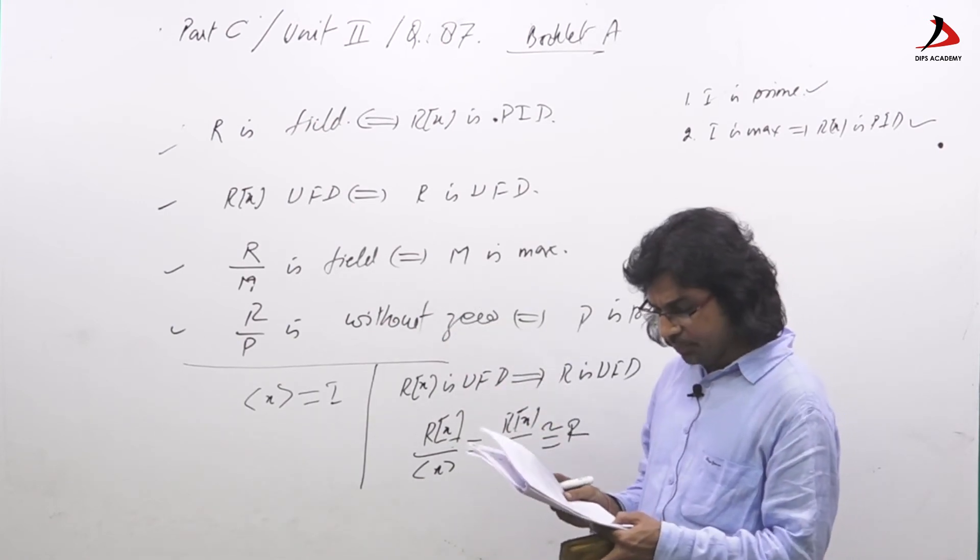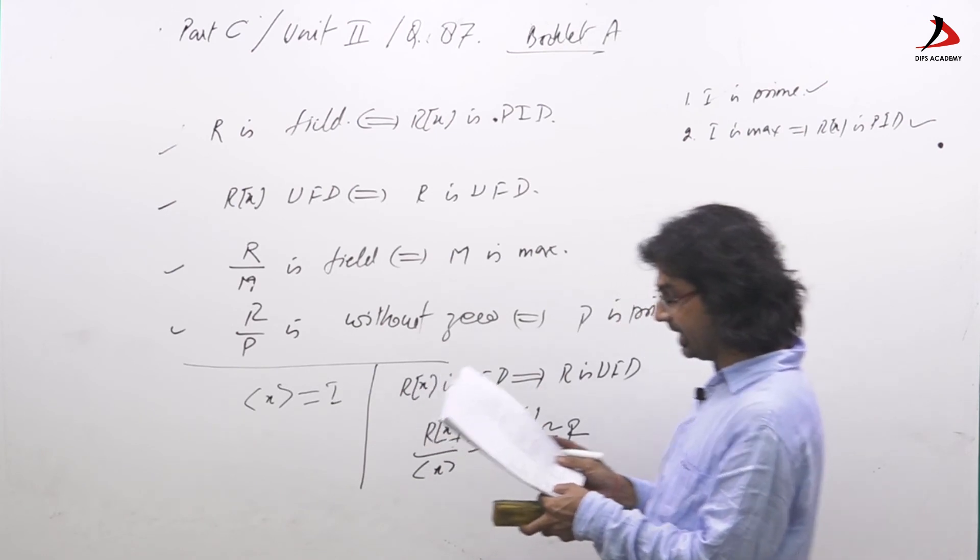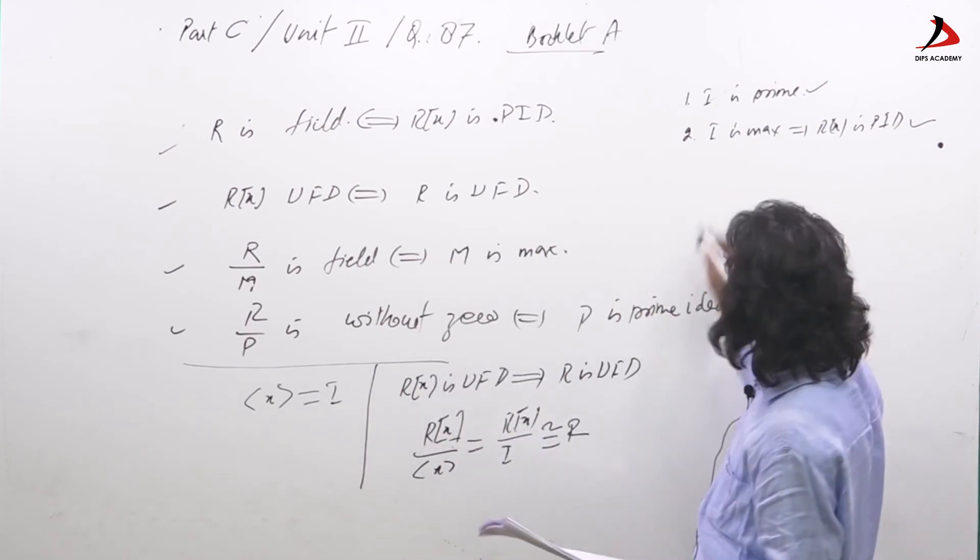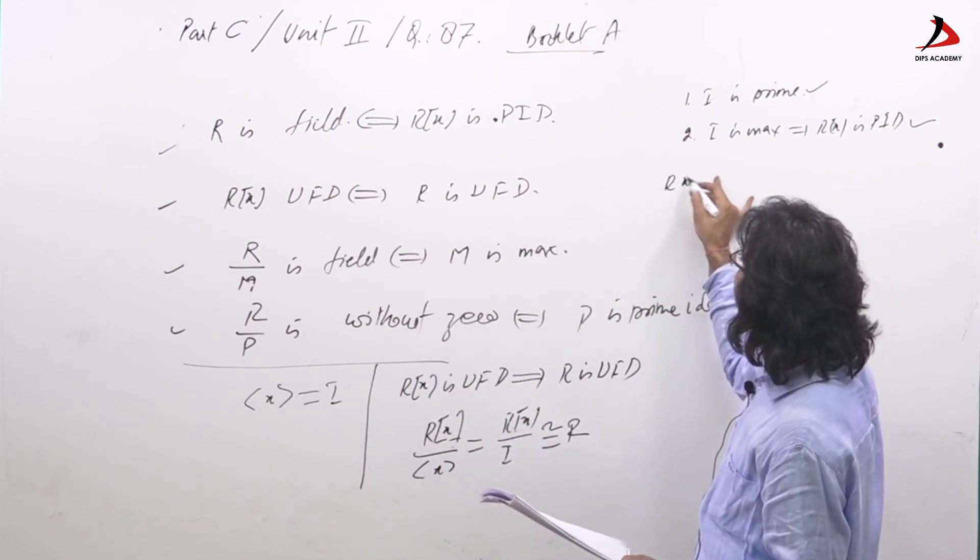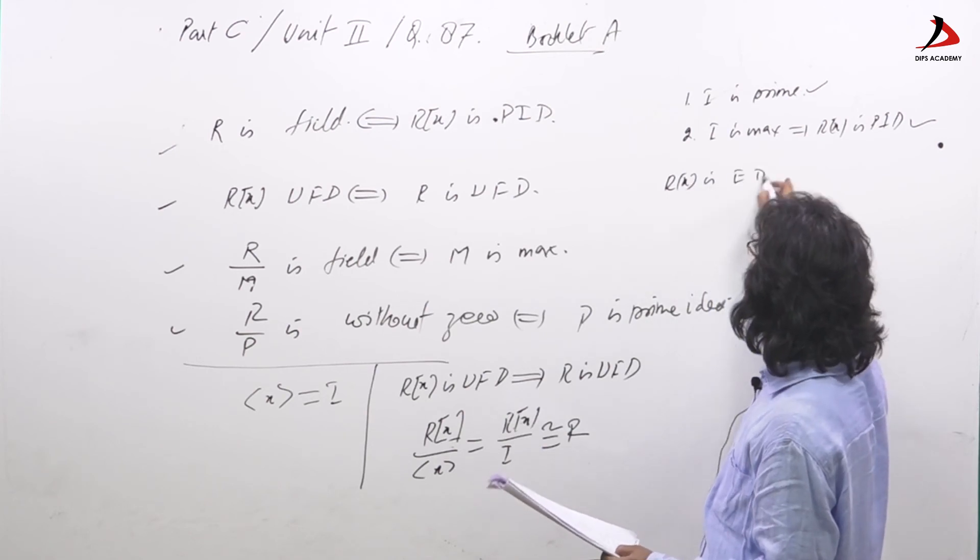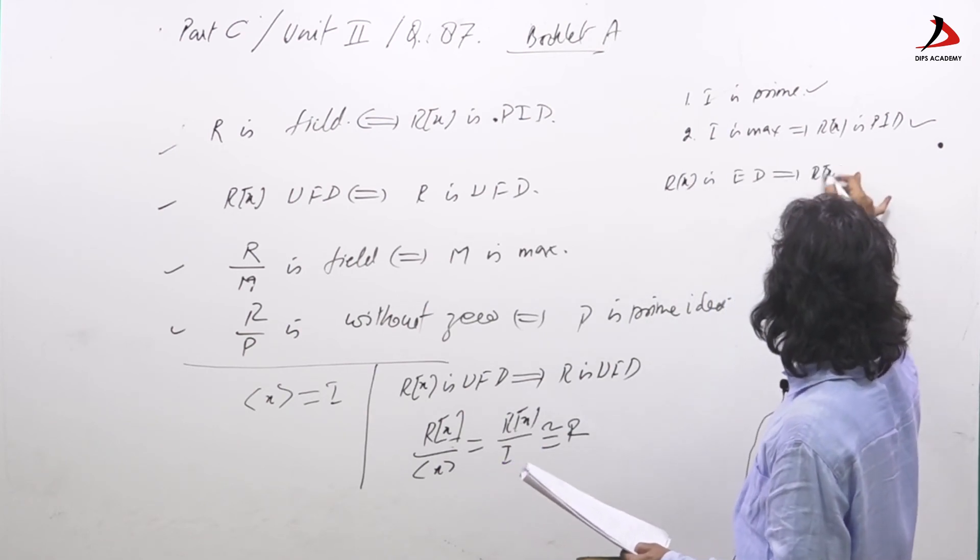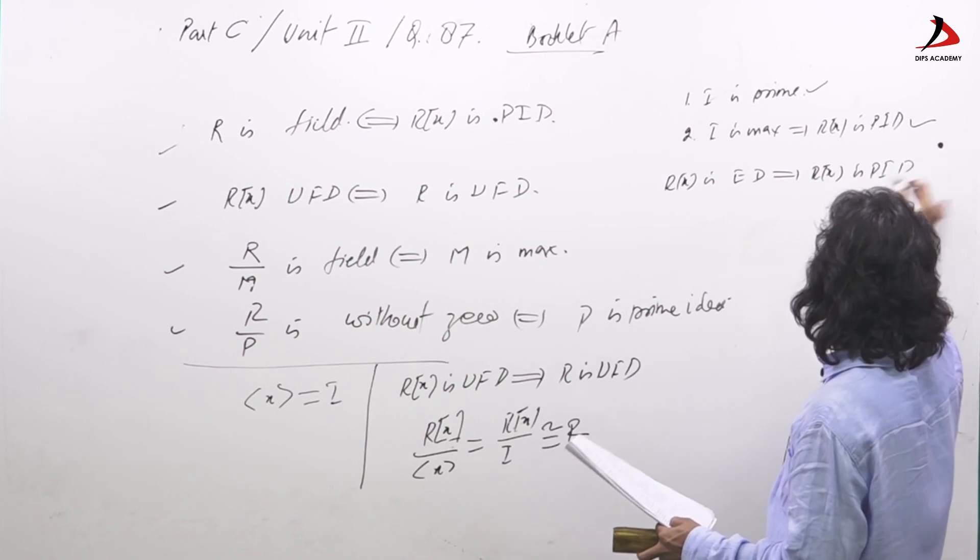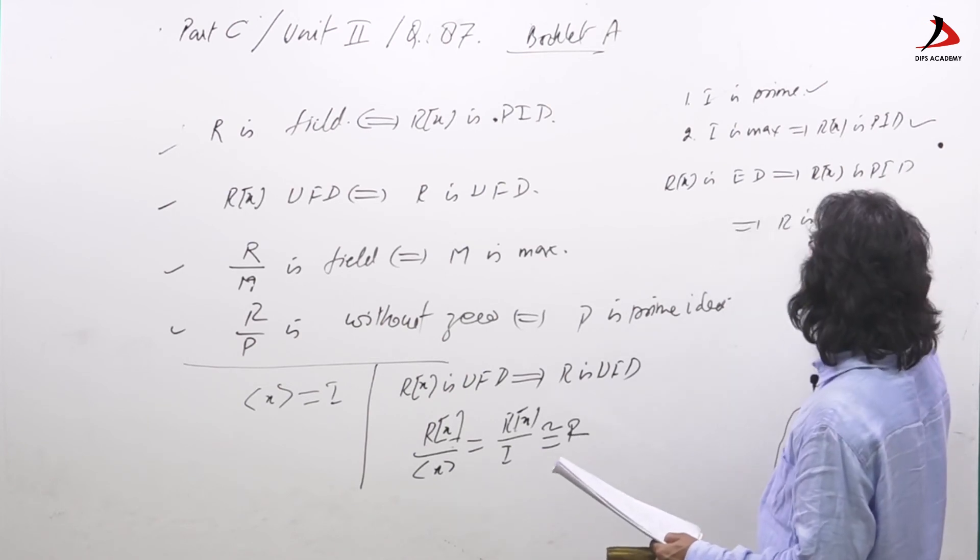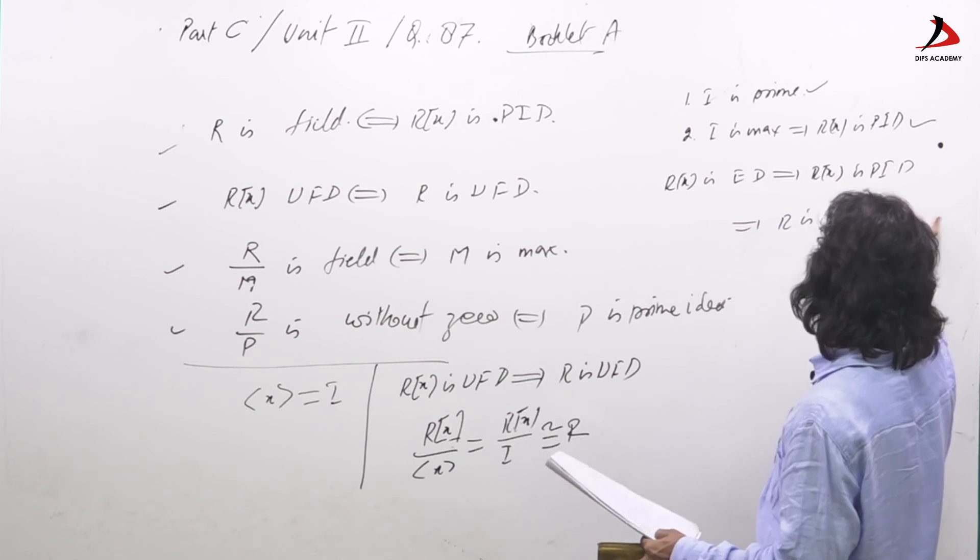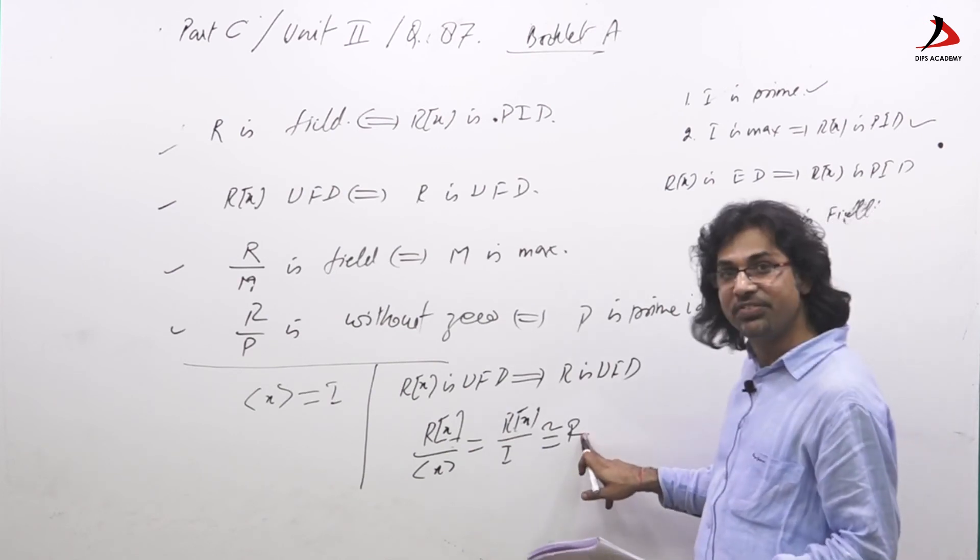Third option, if Rx is ED, then I is maximal. We know as Rx is ED implies Rx is PID implies R is field. So again here, R is field.